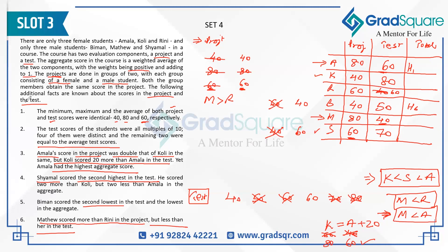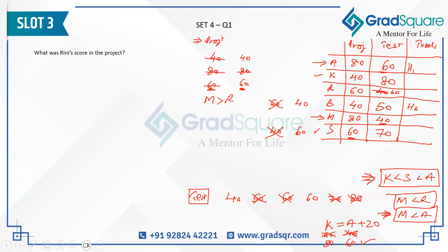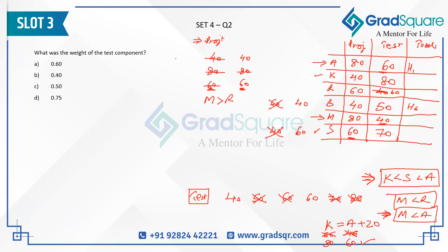All project and test values have been figured out. We still need the weights of project and test components, but let's first look at the questions. For question 1: what is Rini's score in project? From our table, Rini's project score is 60. That's the answer.